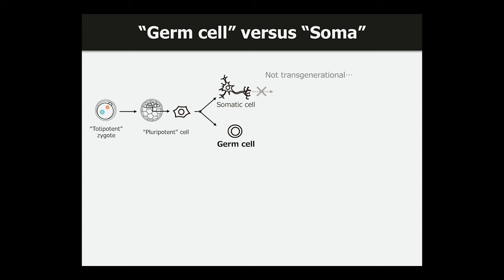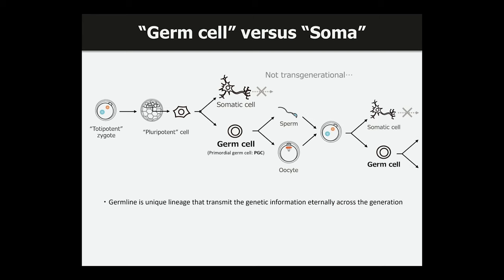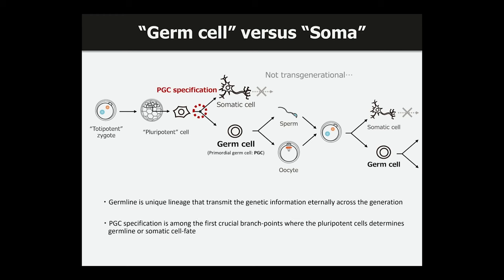A key difference is that somatic cells cannot inherit their genetic information to the next generation. However, germ cells — in particular primordial germ cells (PGCs), specified from pluripotent cells — can make sperm and oocytes, and by fusing them they can again make the totipotent zygote. The germline is a quite unique lineage that transmits genetic information eternally across generations. I want to emphasize that PGC specification is the first crucial branch point where pluripotent cells determine their fate toward either somatic or germ cell fate.